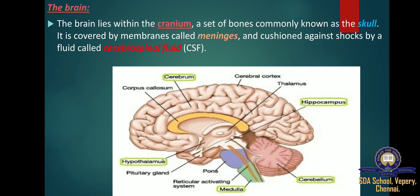The meninges are three layers of membrane that protect the brain and spinal cord. The delicate inner layer is the pia mater, the middle layer is the arachnoid — a web-like structure filled with fluid that cushions the brain. The third outer layer is called the dura mater.